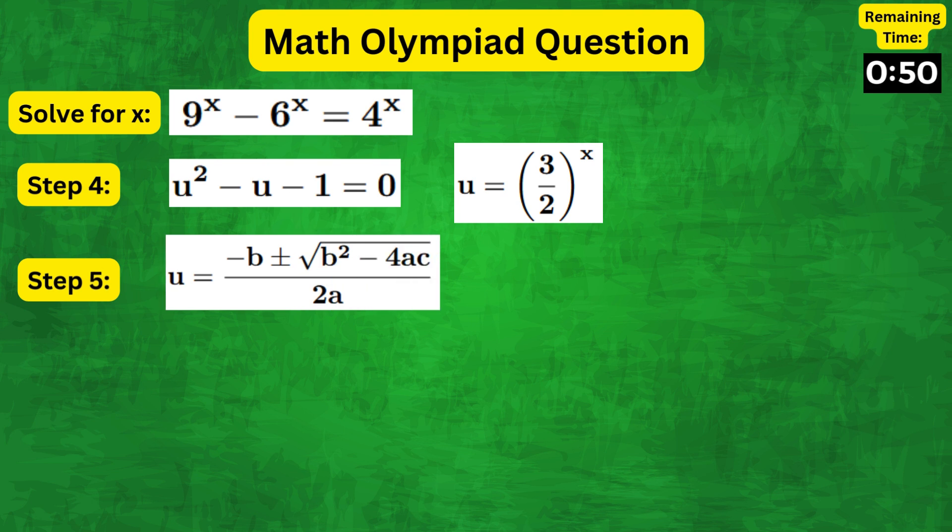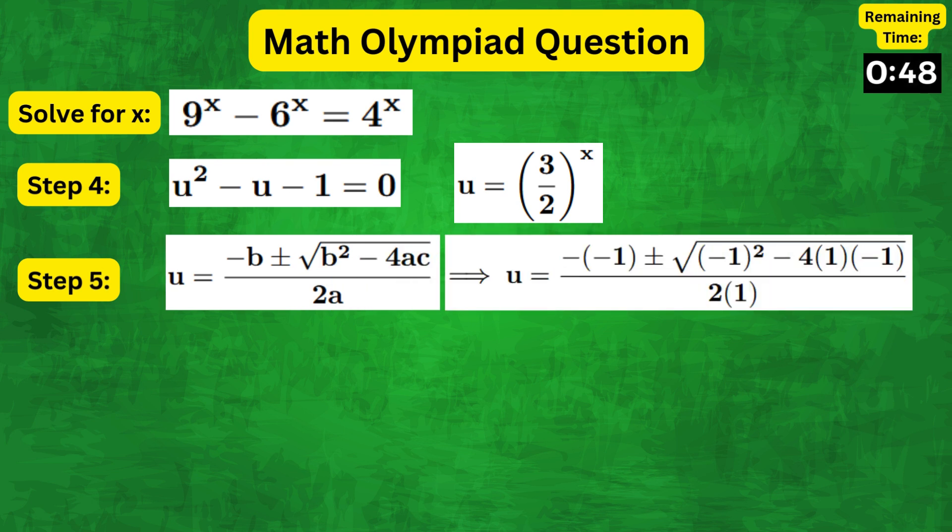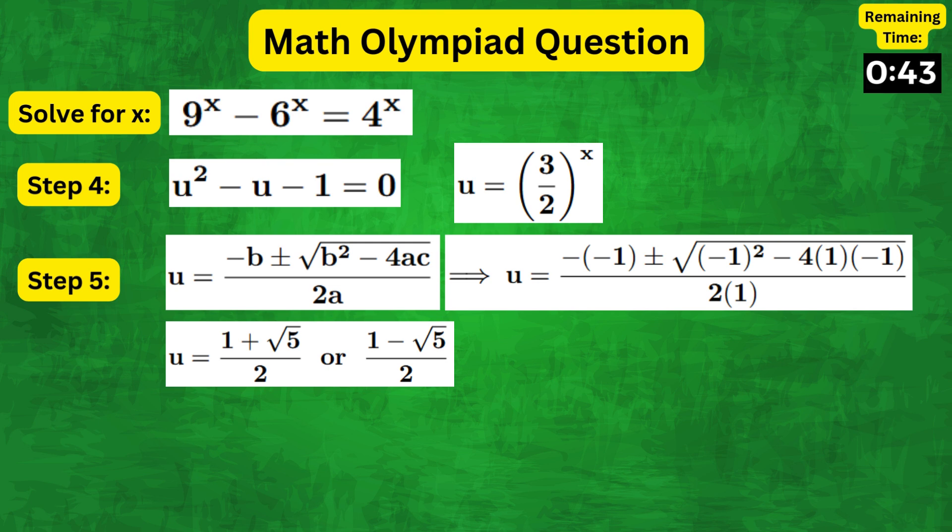Using the quadratic formula with a equals 1, b equals minus 1, and c equals minus 1, we get u equals 1 plus or minus square root of 5 over 2.